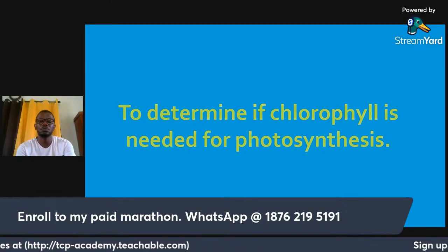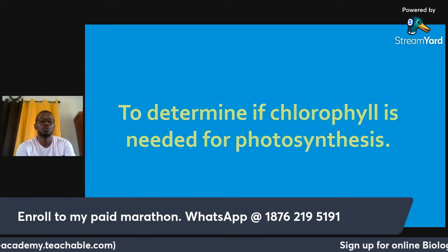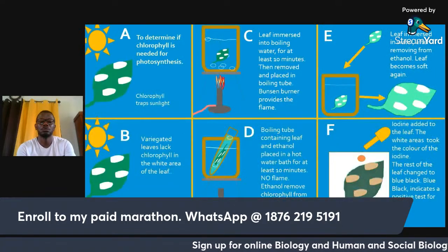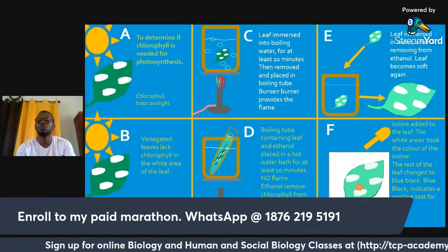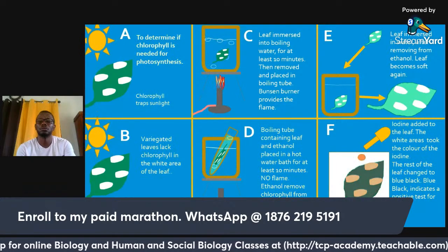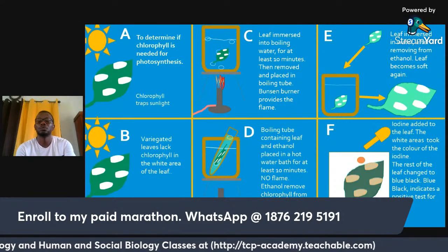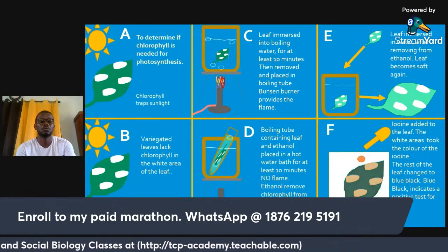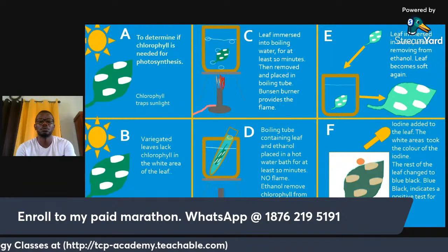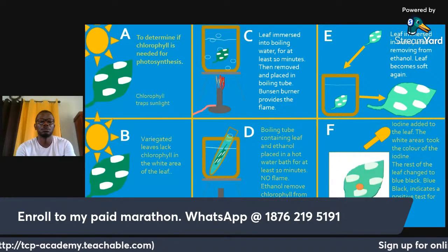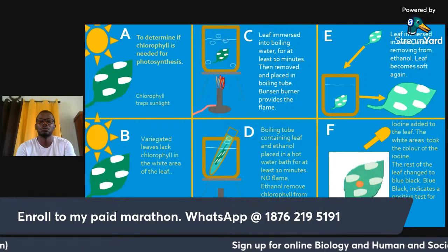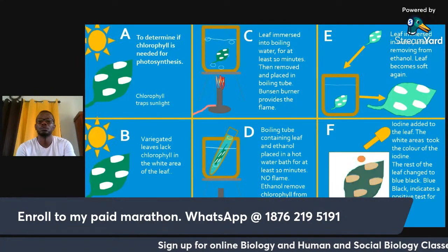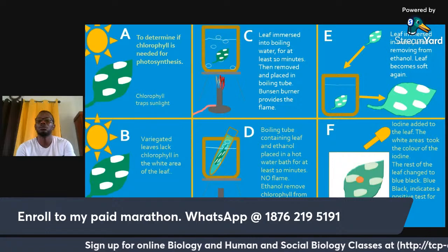Please follow the steps in the experiment to reach a conclusion. Section A: chlorophyll traps sunlight. Section B: lack of chlorophyll in the white areas of the leaf. Section C: the leaf is immersed in boiling water for at least 10 minutes, then removed and placed in a boiling tube. The Bunsen burner provides the flame.